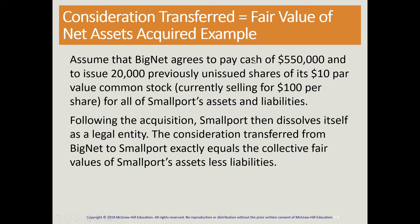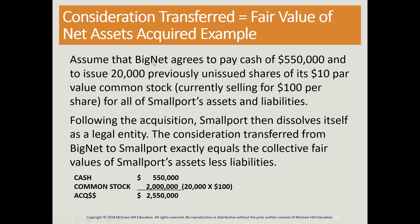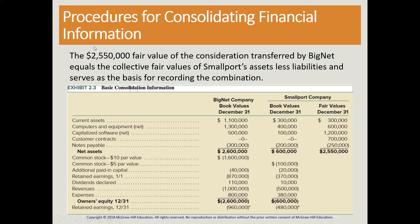We have the example where Big Net purchased Small Port. The acquisition price was composed of cash of $550,000 and 20,000 shares of stock at fair market value on the date of acquisition. In this case, the amount paid to acquire Small Port tied exactly to the fair value of Small Port's net assets on the date of acquisition, and therefore there was no goodwill.